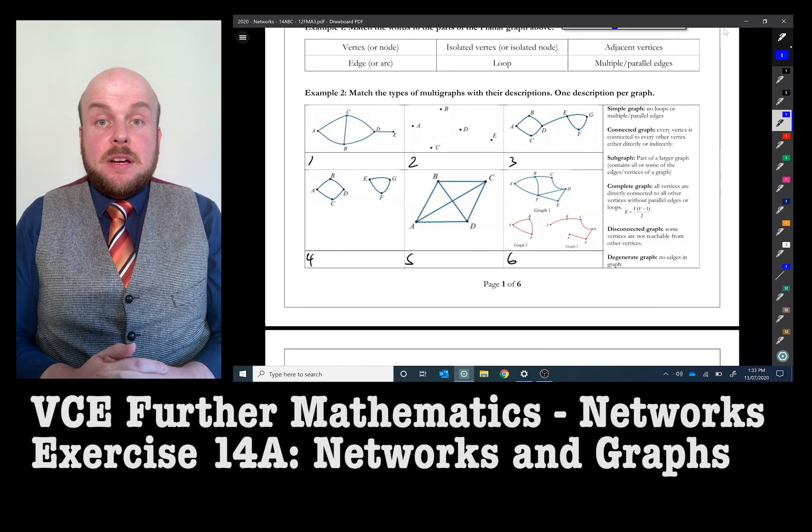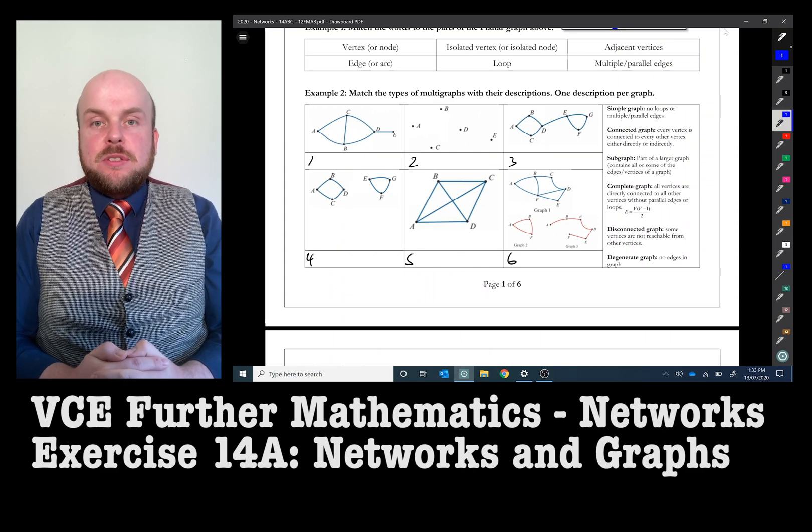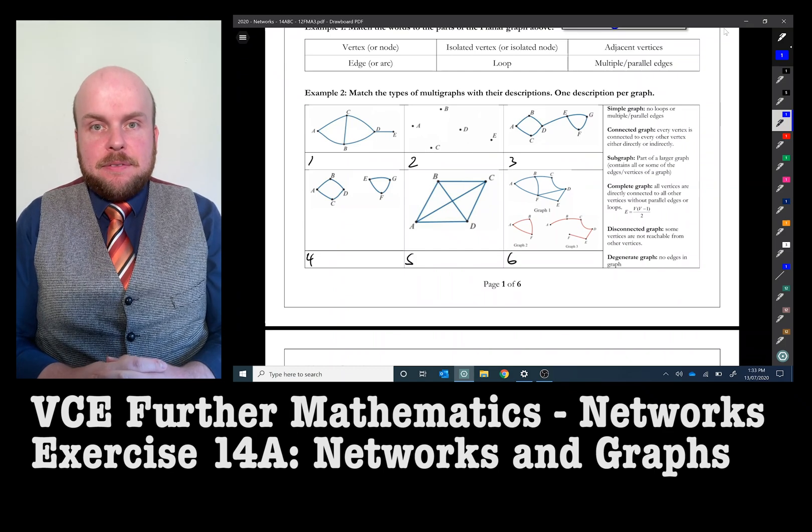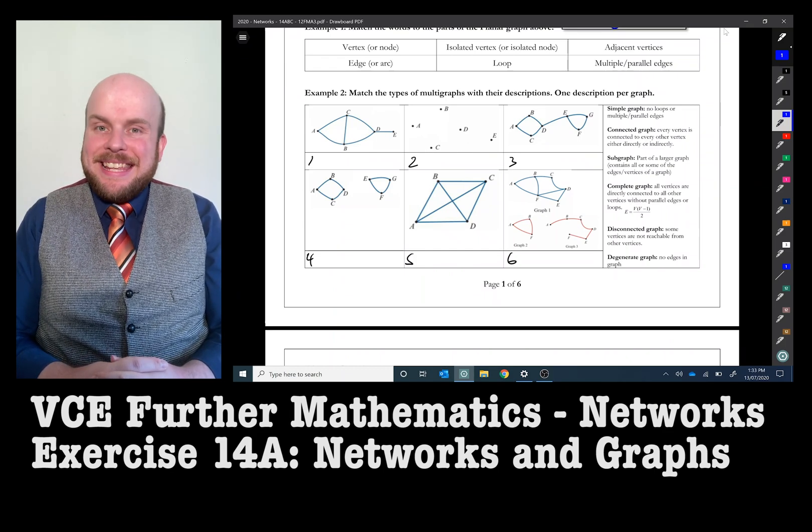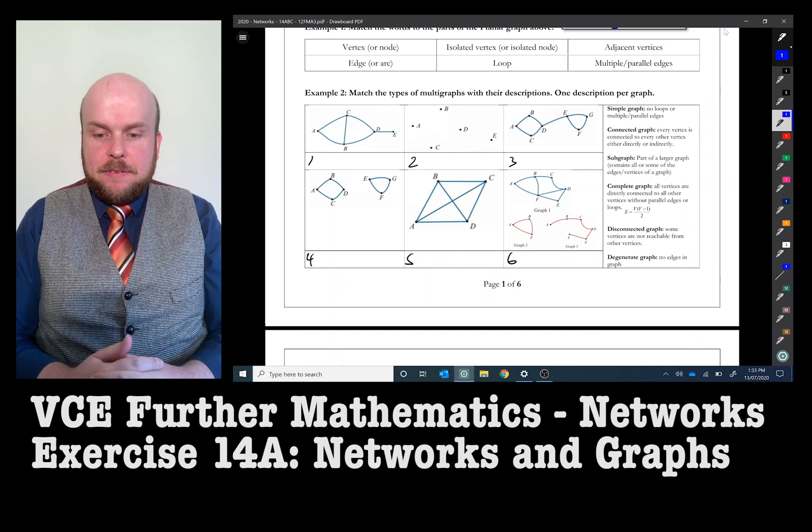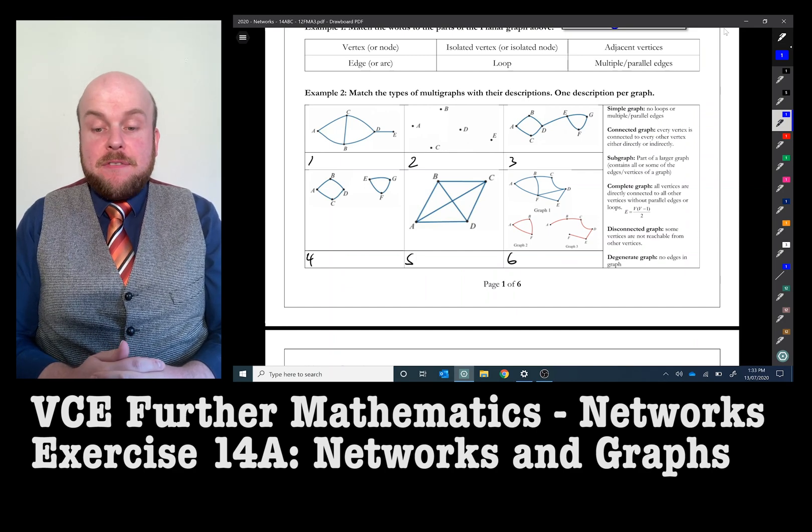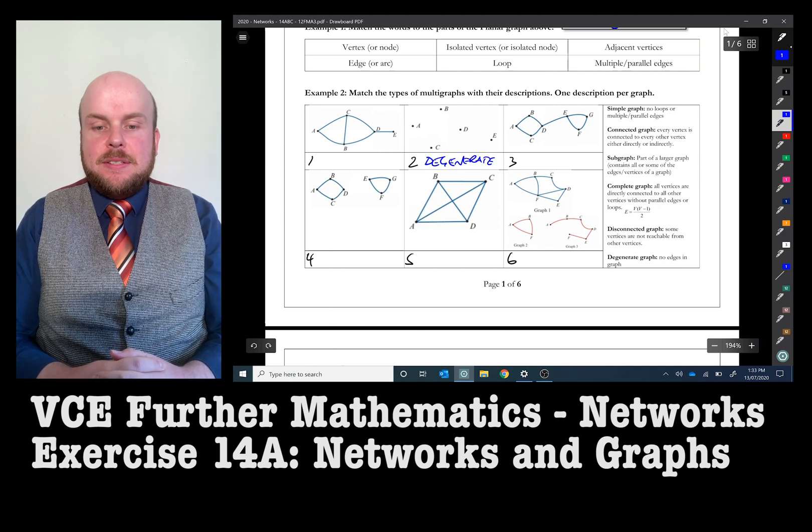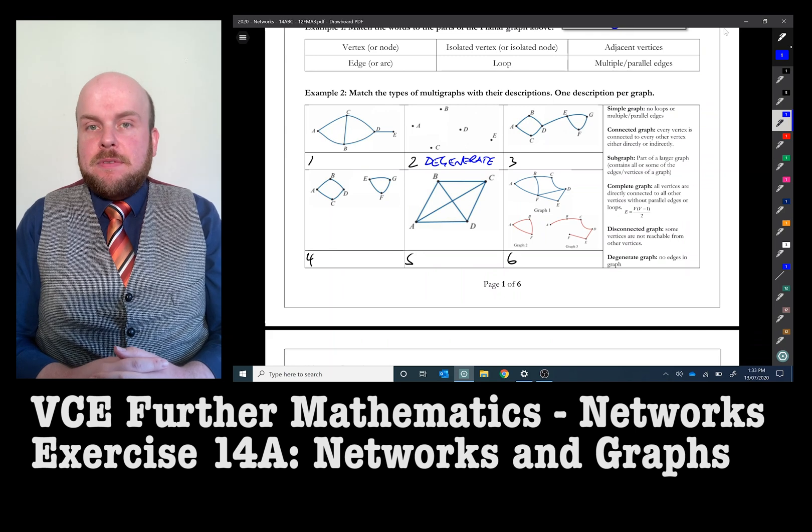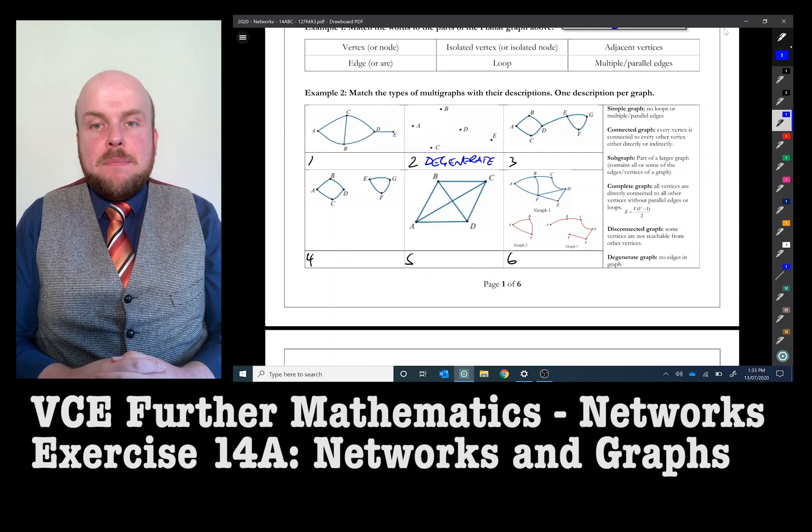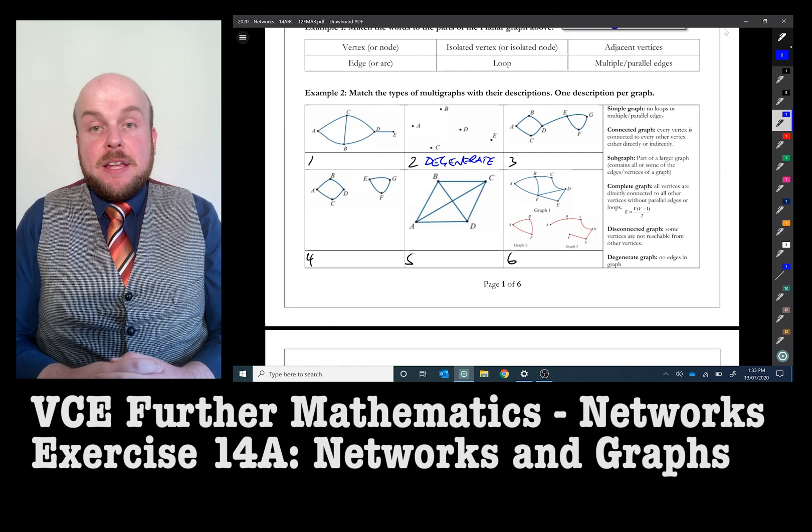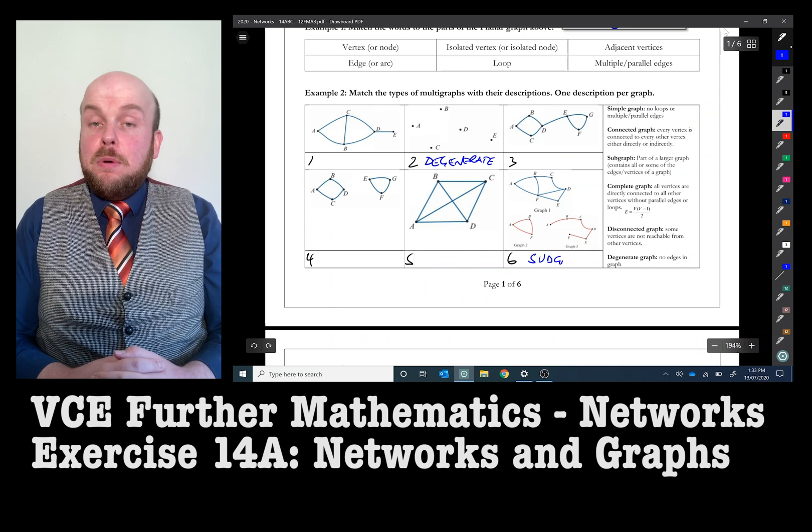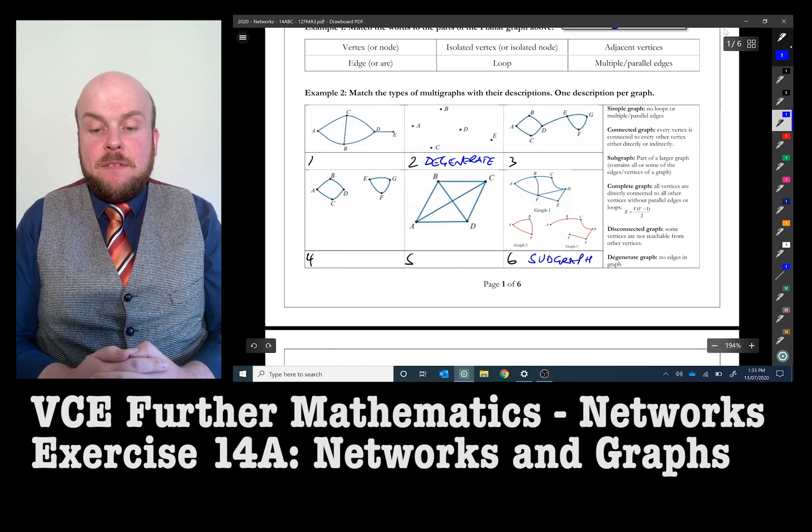Different networks are called different things depending on their structure. We can sometimes call a network graph a multi-graph. One of the easiest to identify is the degenerate graph. A degenerate graph has no edges in the graph whatsoever and is only made of vertices. Another type of graph that we have is a subgraph. A subgraph is what is a part of a larger graph and may contain some or all of the edges and vertices of the graph.